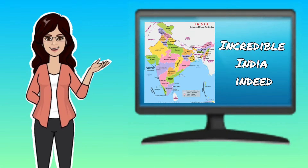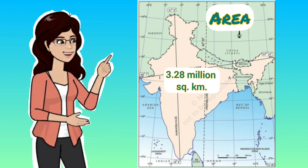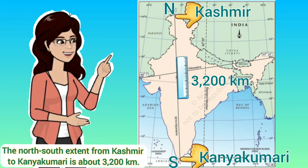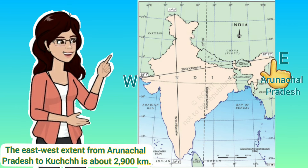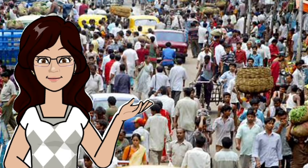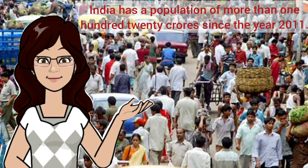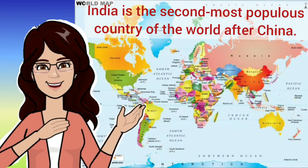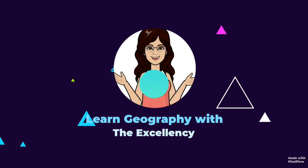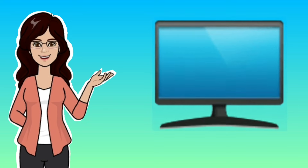India has an area of about 3.28 million square kilometers. The north-south extent from Kashmir to Kanyakumari is about 3200 kilometers, and the east-west extent from Arunachal Pradesh to Kutch is about 2900 kilometers. India has a population of more than 120 crores as of the year 2011, making it the second most populous country in the world after China.